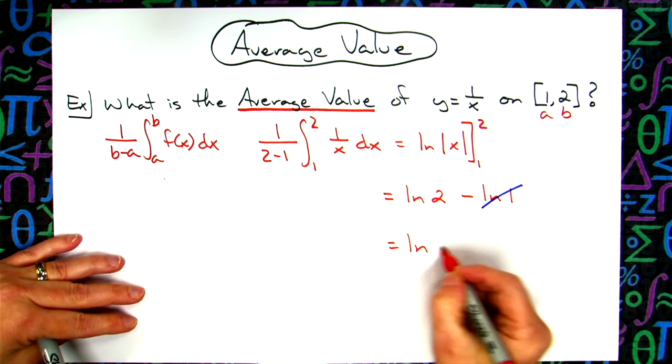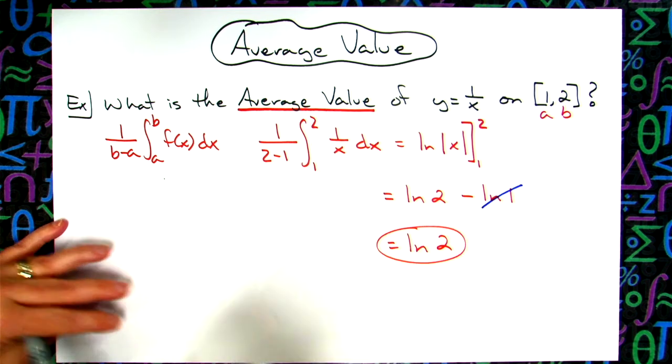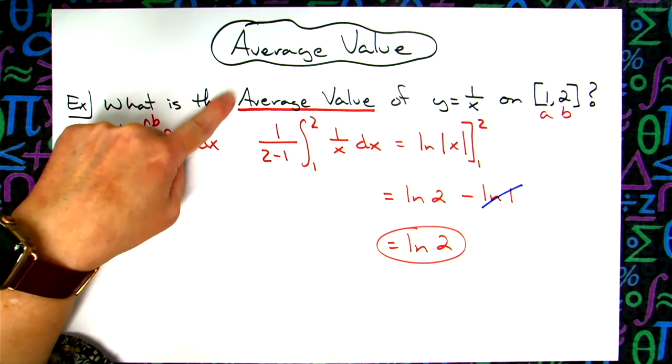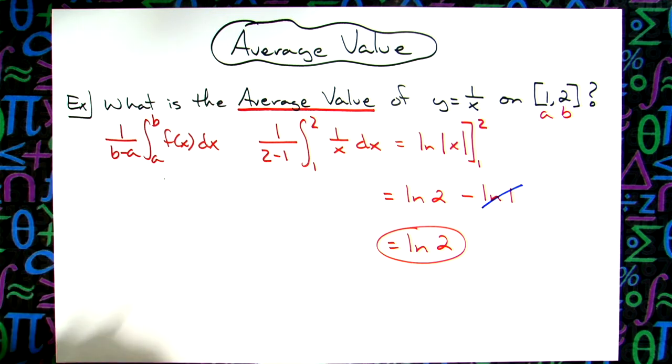So it's a straightforward problem as long as you make sure you do the right thing. But like I said, in my classes students will often confuse average value with average rate of change. So just memorizing the formula is going to help a lot on this.